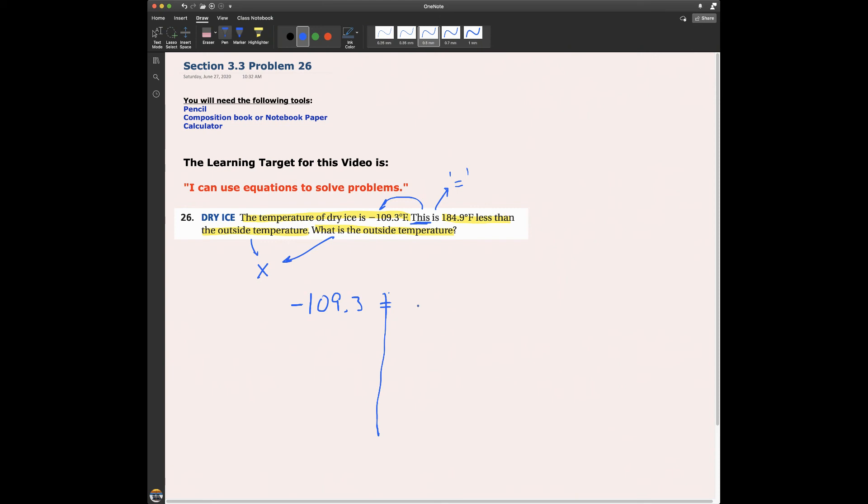It equals whatever the temperature is. So if the temperature is outside, I just subtract 184.9 degrees from that. Because this sentence says, this temperature, the temperature of dry ice is 184.9 degrees less than the outside temperature.